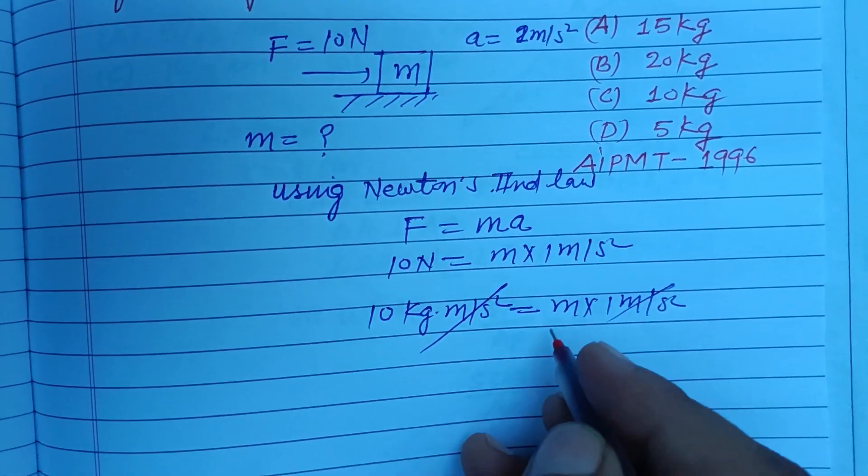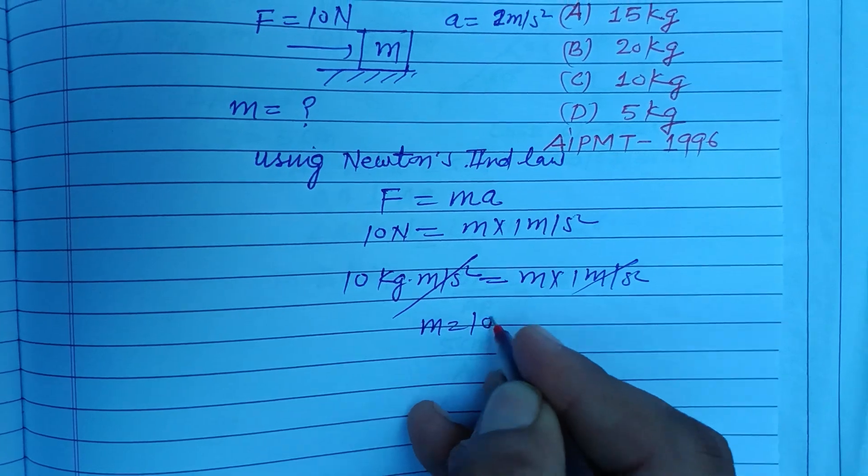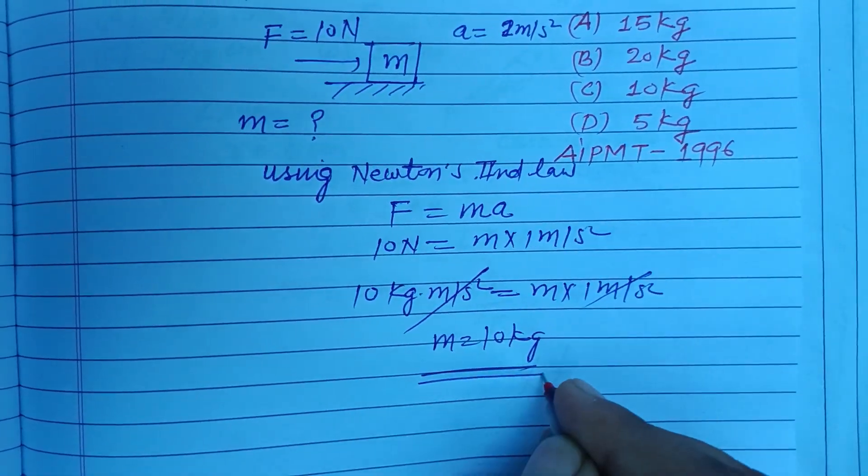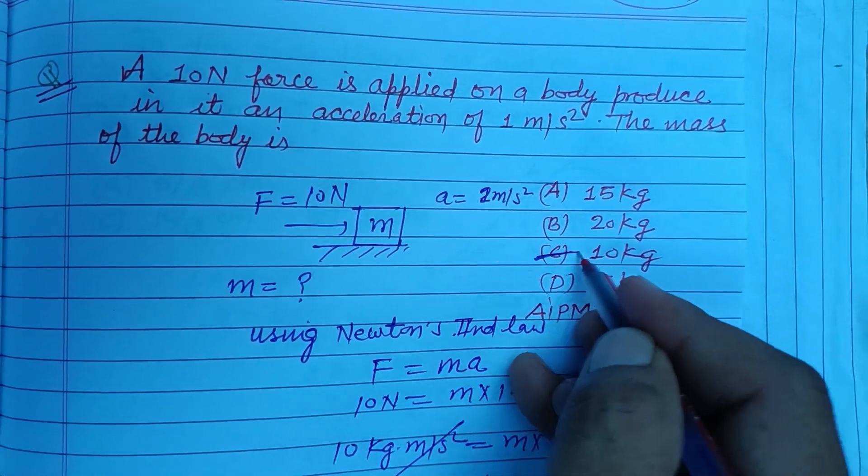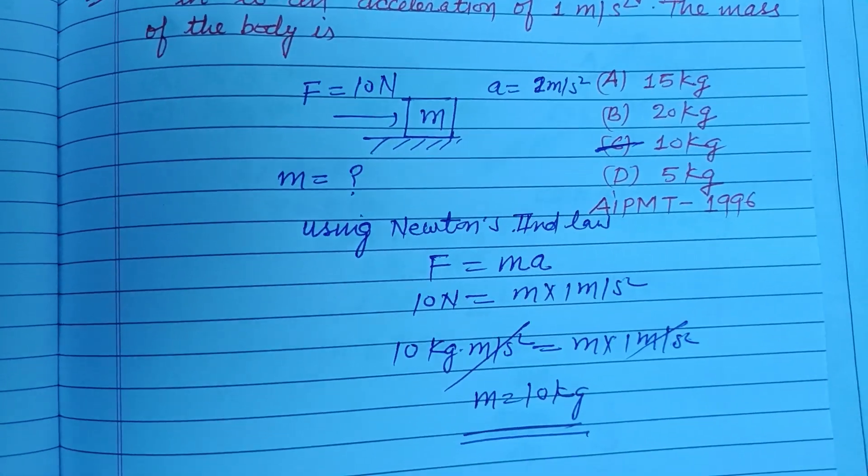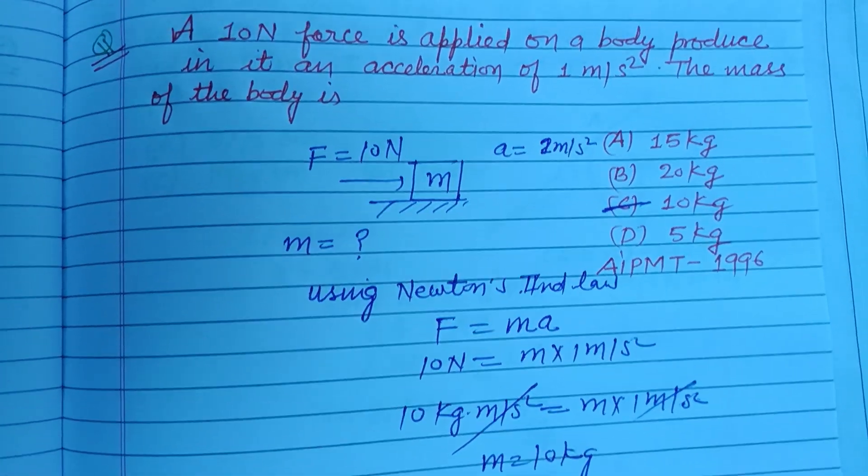Meter per second squared cancels out, so we get m equals 10 kg. The mass of the body is 10 kg, which is found in option C. So option C is correct.